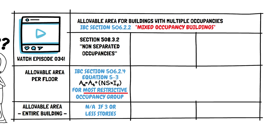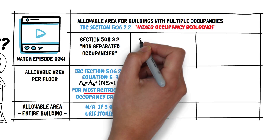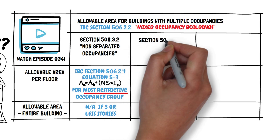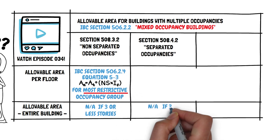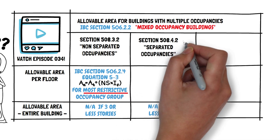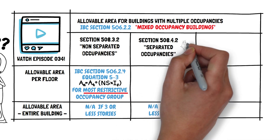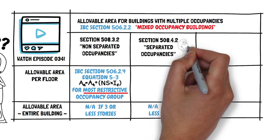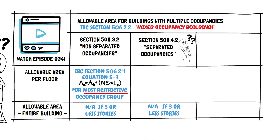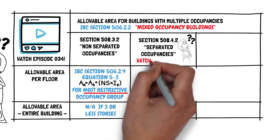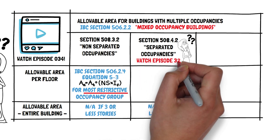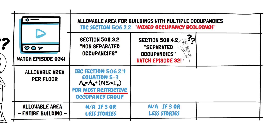In non-separated occupancies, we use Equation 5.3 for the most restrictive occupancy group to find our allowable area per floor. Let's talk about Separated Occupancies. IBC Section 508.4.2 covers Separated Occupancies, which means you are providing a fire-rated separation between occupancies as required by Table 508.4. There is a whole episode dedicated to this topic — check out episode 32.